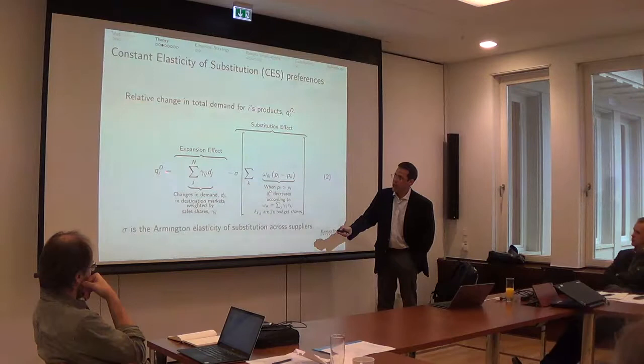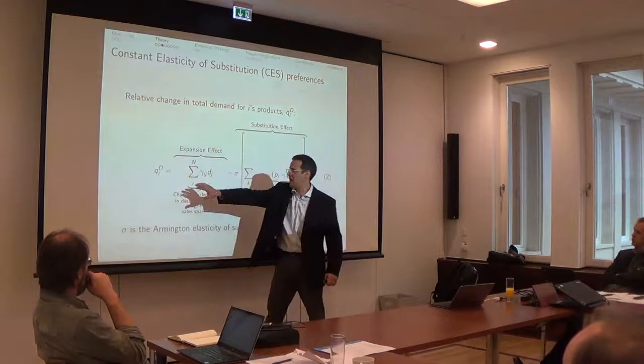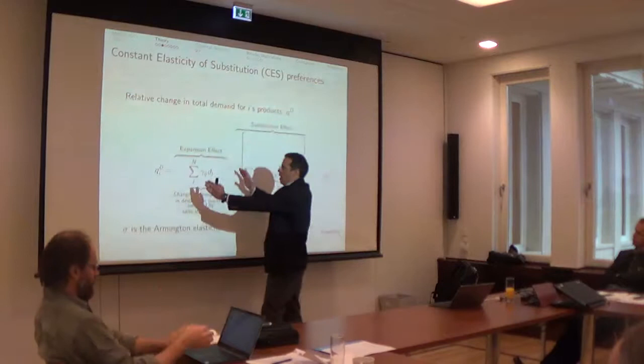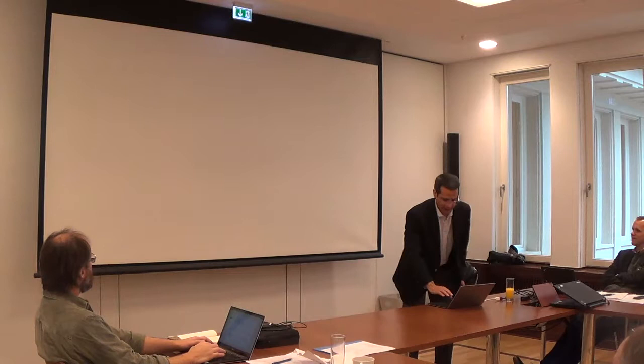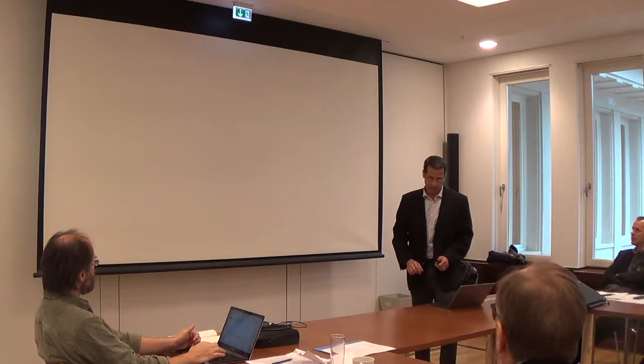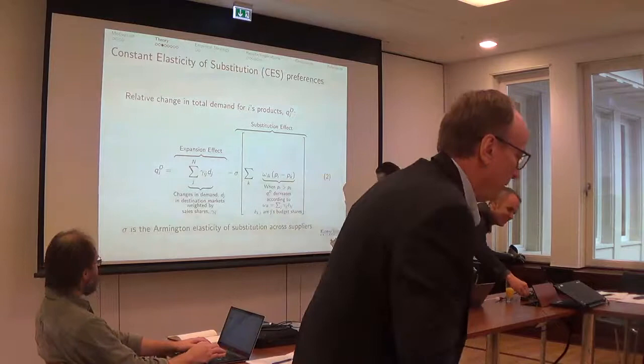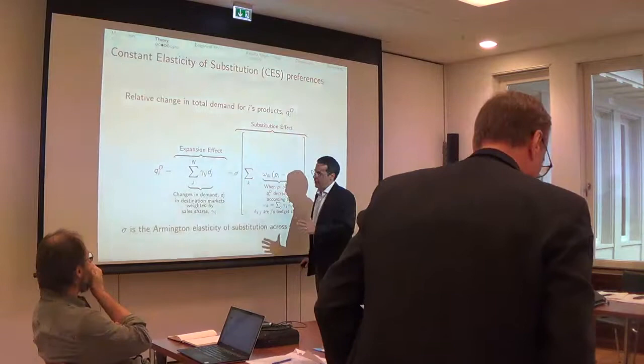And what we have here is a percentage change in the demand for agricultural goods in country i. So this is how much goods are demanded from one country. The beauty of the CES function is that we can decompose this change in two chunks. One is expansion.